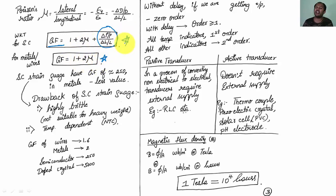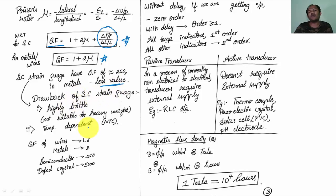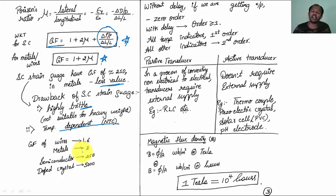Problems based on gauge factor are very important for engineering service examinations. The gauge factor of a semiconductor strain gauge is approximately 250. For metals, the gauge factor of a wire is 1.6, and for a metal it is 2. For a semiconductor it is 250, and for a doped crystal it is 5000.